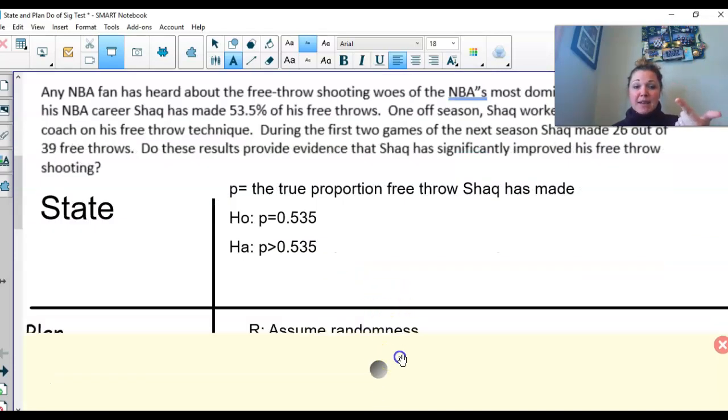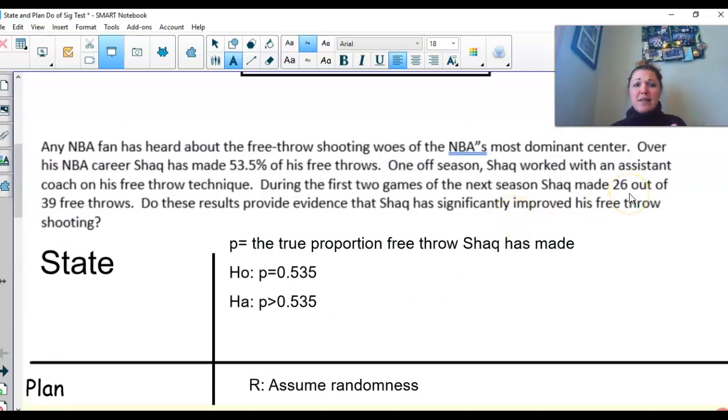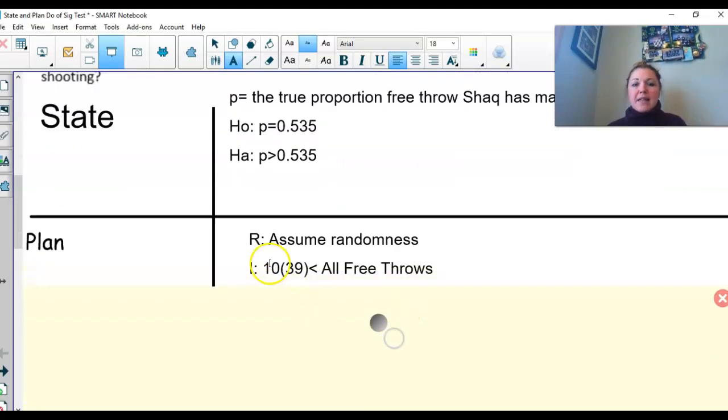I is that independent. That's the 10N, you should have in your notes from before, which is less than capital N. Well, what is N? N is our sample size. So in this case, we have to figure out what is our sample size? Is it 26 or is it 39? And in this case, it's 39. Why? Well, because 26 is a part of that 39. So he made 26 out of the 39 total. So we take that 10 times 39, which is less than all the free throws Shaq can make.